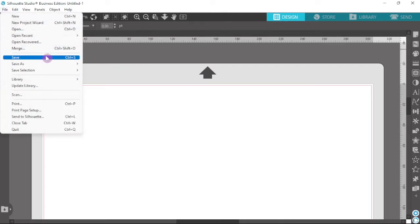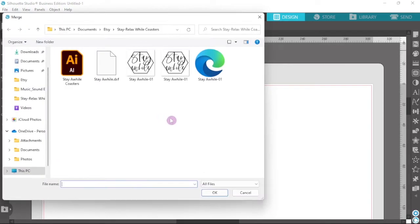So anyway, with that being said, I'm just going to bring in my design. So I'm just going to go to File and Merge and then I think I'll just use the PNG because you can use an SVG as well but not a lot of people have the Business Edition of Silhouette Studio. If you are on Cricut Design Space then you can just upload the SVG. That's something that I do like about Cricut Design Space.